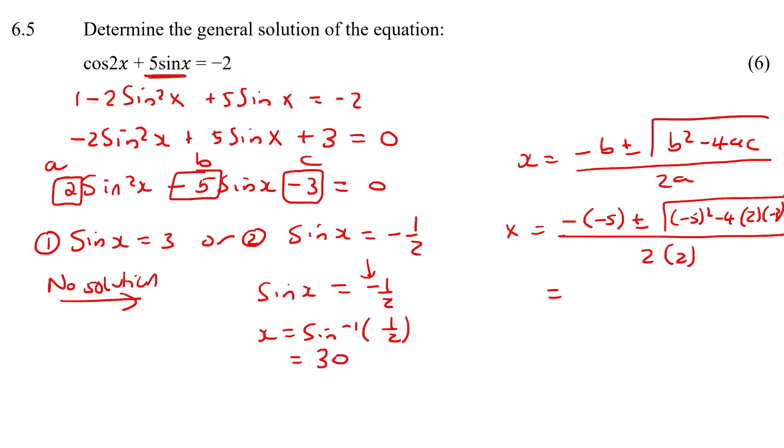Now the negative tells us that we are in the quadrants where sin is negative. If we have the CAST diagram, we know that sin is positive in these two, so sin would be negative in quadrant 3 and quadrant 4.